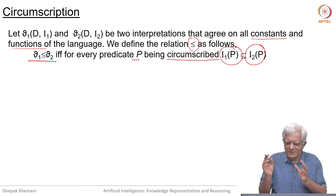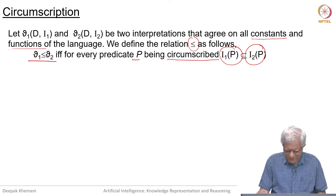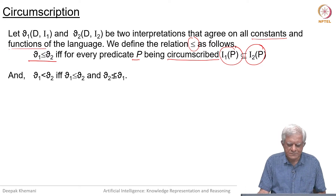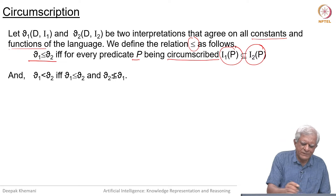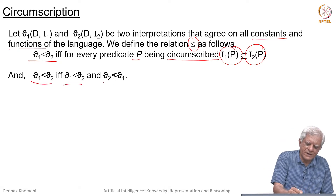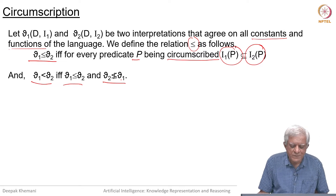So I1 has a smaller image and I2 has a larger image, then we say I1 is less than or equal to I2. And if you want strict ordering, then it should be less than or equal to, and I2 should not be less than or equal to I1.